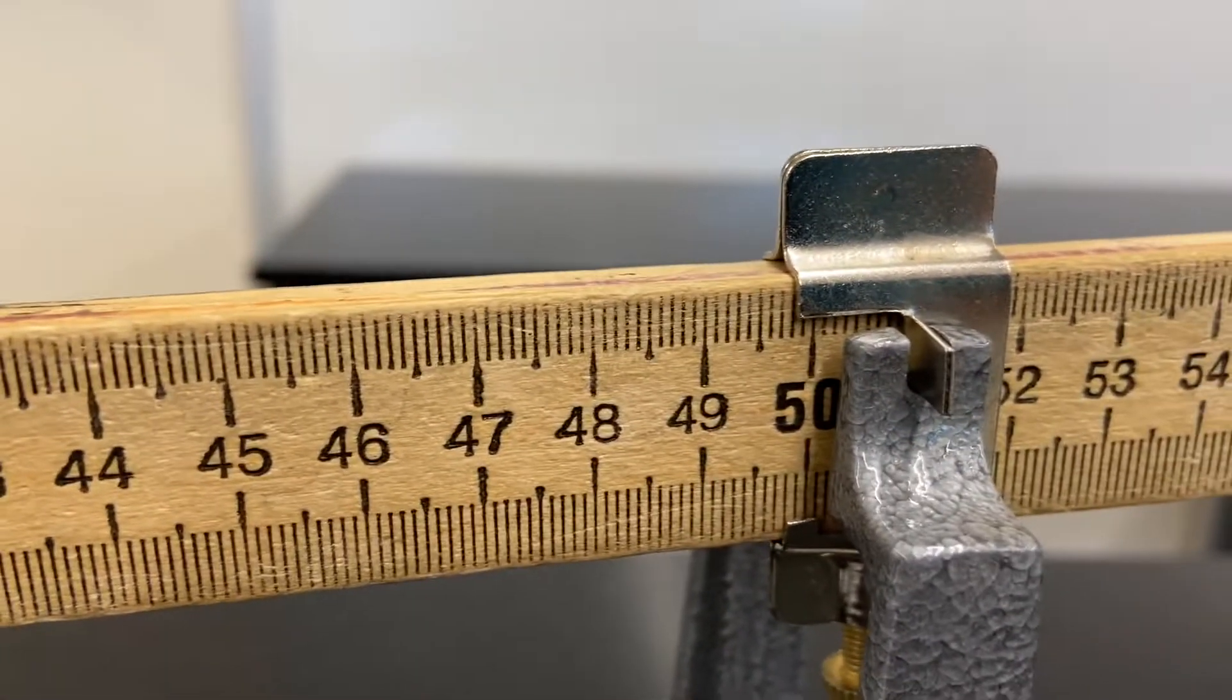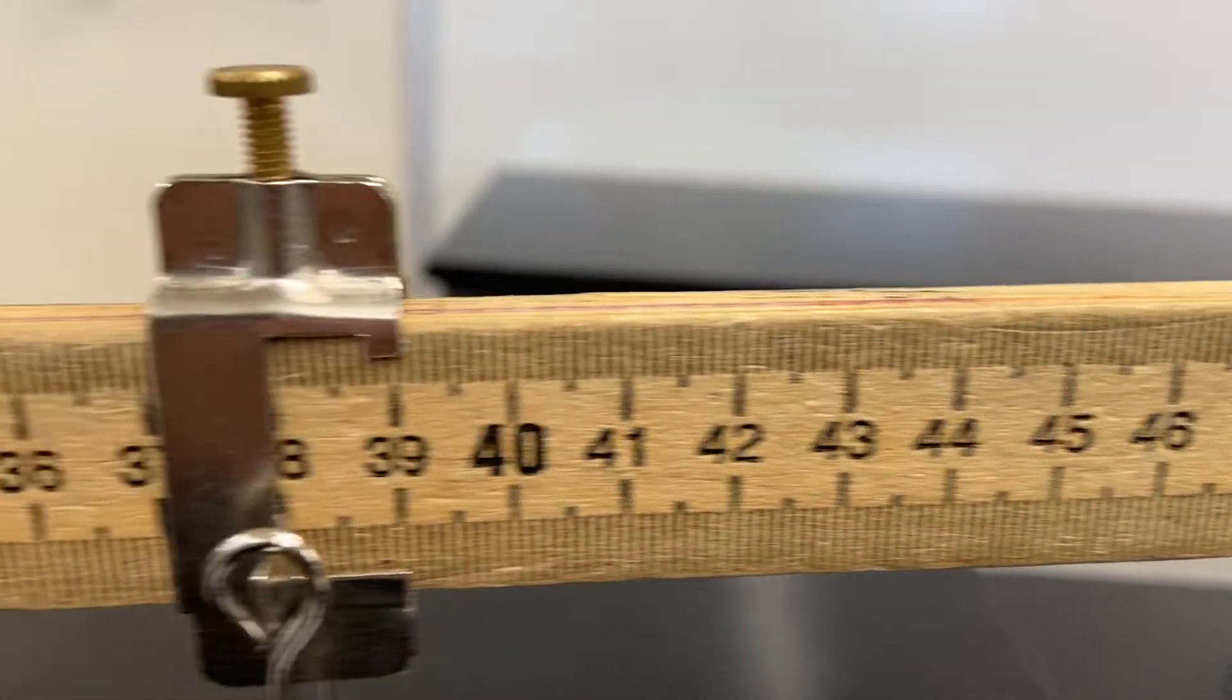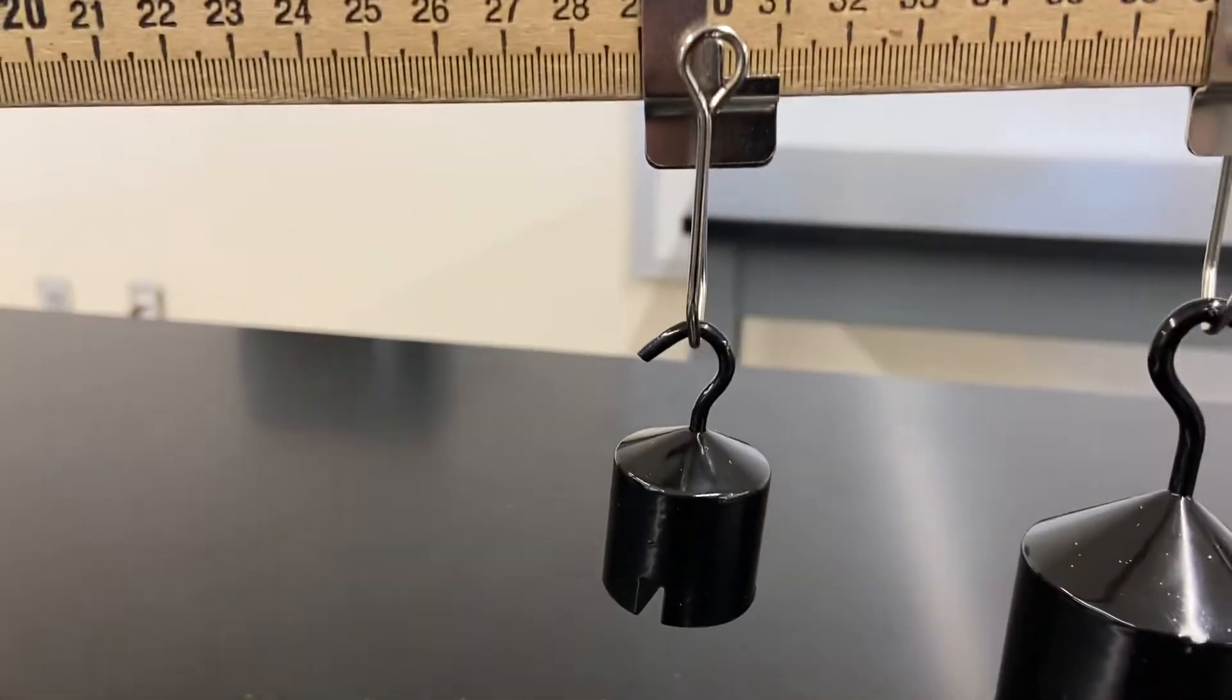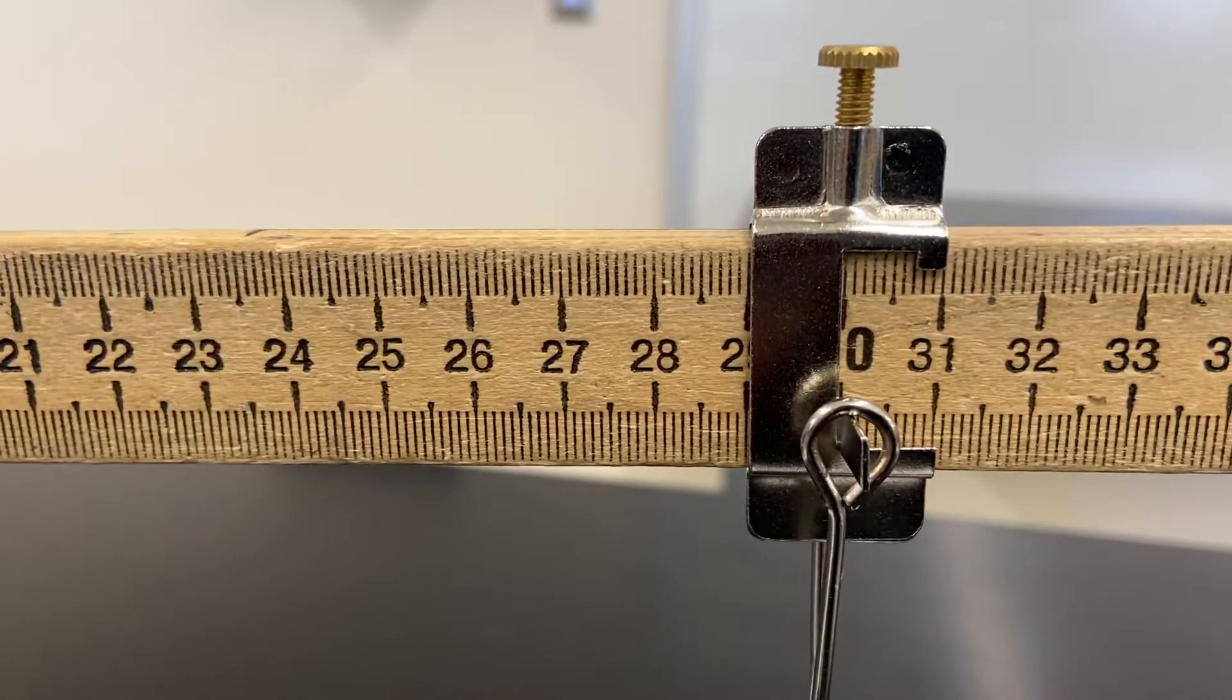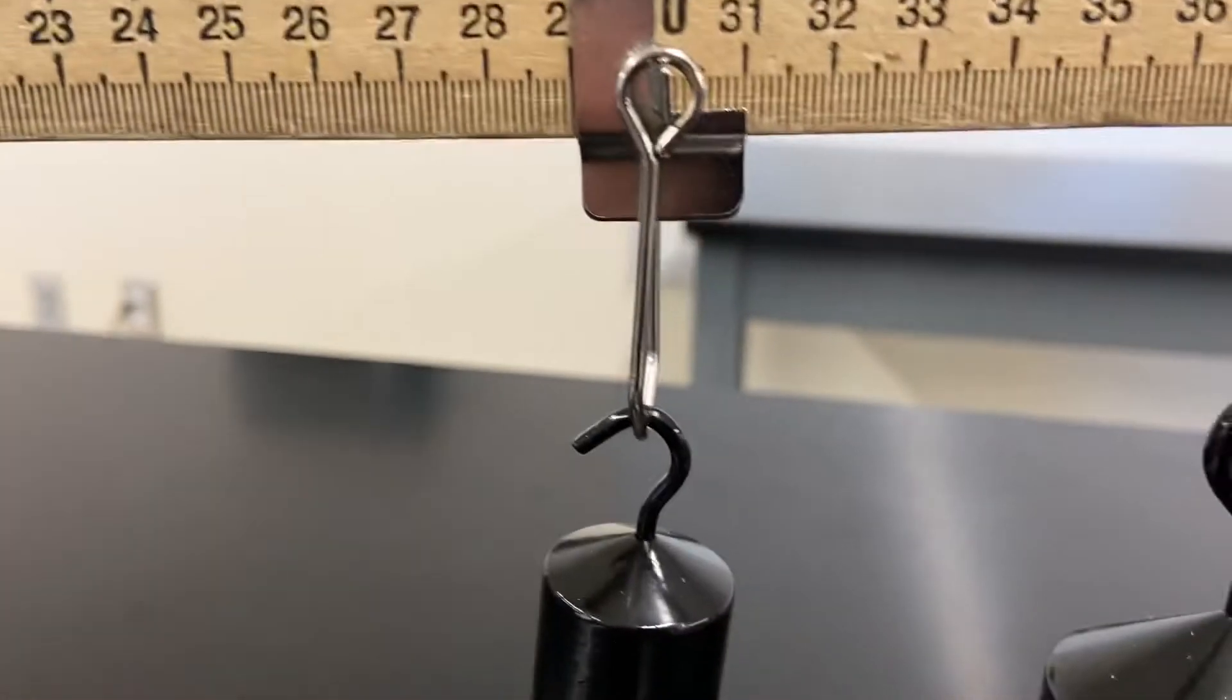Here's our center of mass, and then we have our 100 gram mass, that's the small one. The 100 gram mass looks like it is at the 30 centimeter mark.